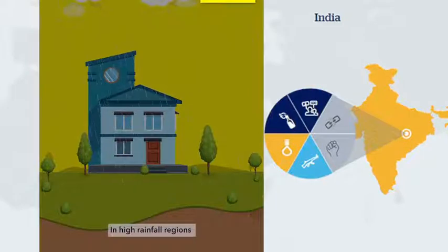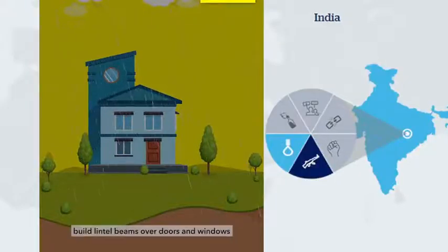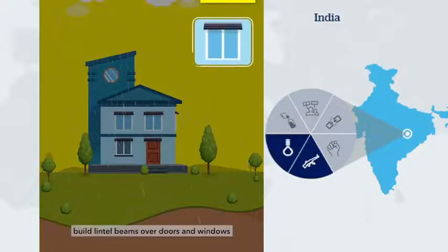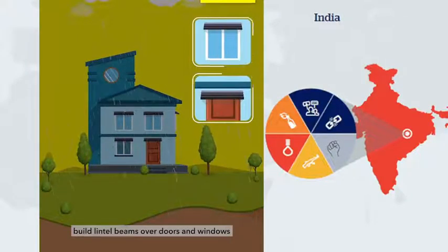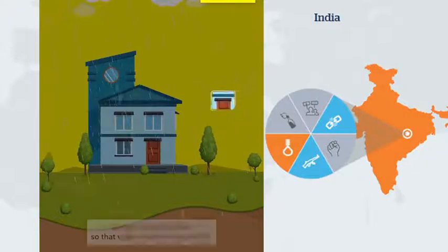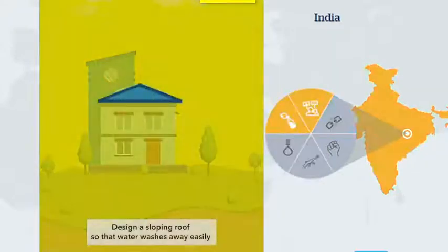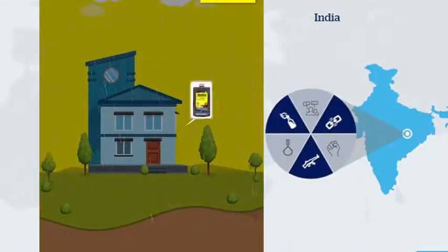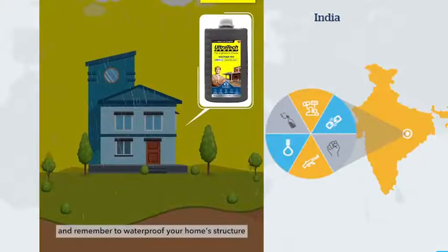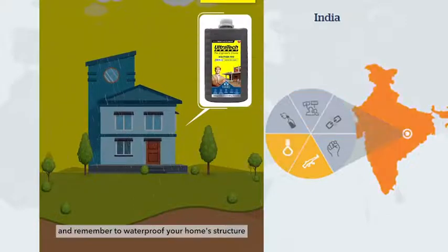In high rainfall regions, build lintel beams over doors and windows. Design a sloping roof so that water washes away easily. And remember to waterproof your home's structure.